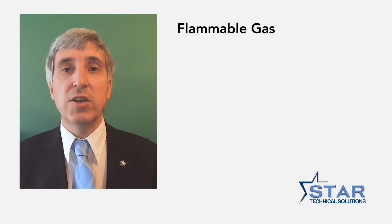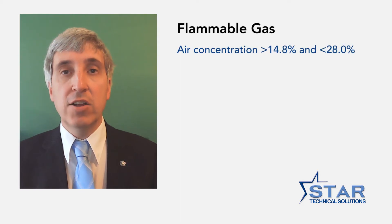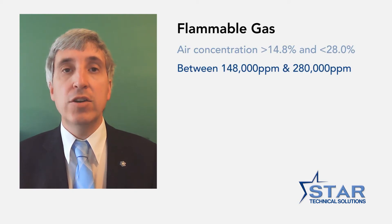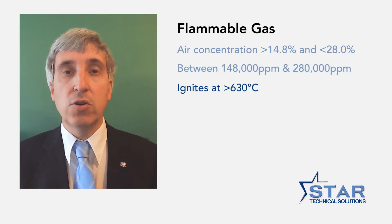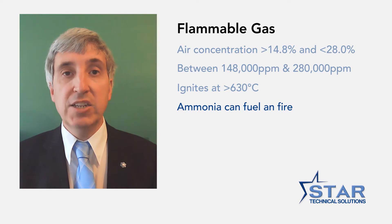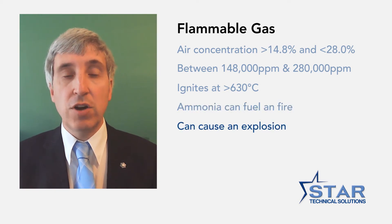The second hazard associated with ammonia is flammable gas. Ammonia gas is flammable in air at concentrations above 14.8% and below 28%. In parts per million terms, this can be expressed as flammable in air at concentrations between 148,000 ppm and 280,000 ppm. For ammonia to become flammable in air, an auto-ignition temperature source of 630 degrees and above is required. In the event of a fire, ammonia gas would further fuel a fire and the result is auto-ignition, which could be an explosion that could harm people and damage the structure of a building to the extent that parts of the building may collapse.